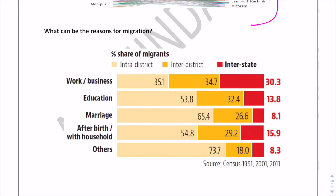Now discussing reasons for migration: there could be many reasons — work or employment opportunities, education (students move for university admissions), marriage (primarily for women), birth, household, or other reasons. Generally, people migrate mainly for job opportunities.